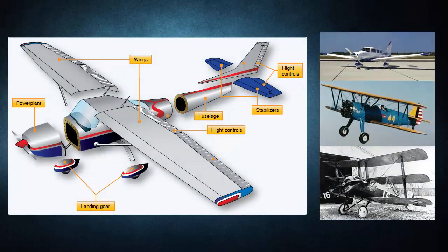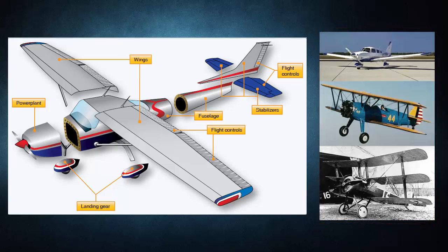The most common aircraft is the fixed-wing aircraft. As the name implies, the wings on this type of flying machine are attached to the fuselage and are not intended to move independently in a fashion that results in the creation of lift. One, two, or three sets of wings have all been successfully utilized. Rotary-wing aircraft such as helicopters are also widespread. Glider airframes are very similar to fixed-wing aircraft, and maintenance practices described for fixed-wing aircraft also apply to gliders. The same is generally true for lighter-than-air aircraft, although thorough coverage of their unique structures is not included in this course.